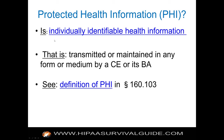What is protected health information? It's individually identifiable health information that is transmitted or maintained in any form or medium by a CE or its BA — that includes paper. The omnibus rule modified the definition: health information now means any information including genetic information, whether oral or recorded in any form or medium, created or received by a healthcare provider, relating to the past, present, or future physical or mental health or condition of an individual.